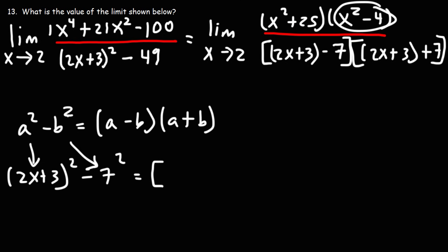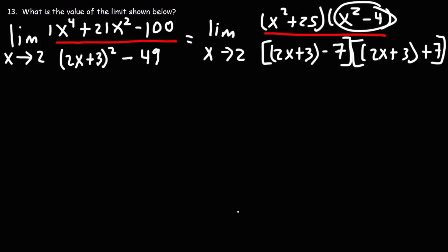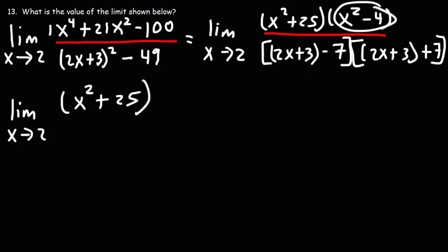Now, x squared plus 25 — we can't factor that. If you have a sum of two squares, you can't factor it; you can only factor the difference of two perfect squares. If you do try to factor it, you're going to get imaginary numbers, not real numbers. For x squared minus 4, the square root of x squared is x and the square root of 4 is 2, so one factor will be plus and the other minus.